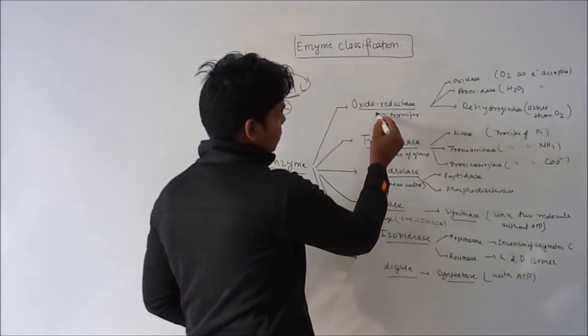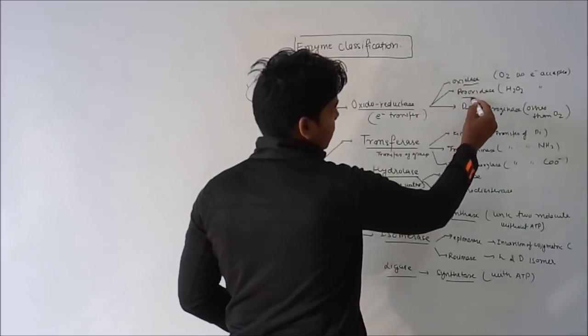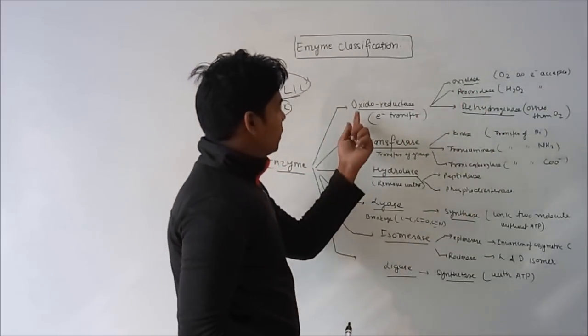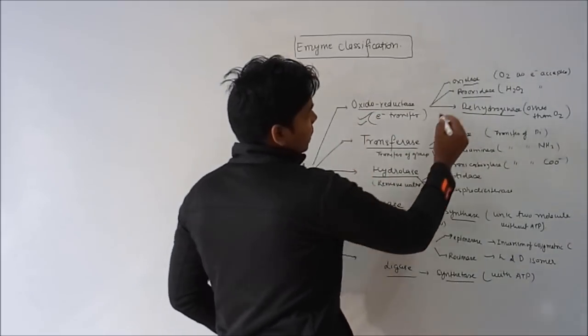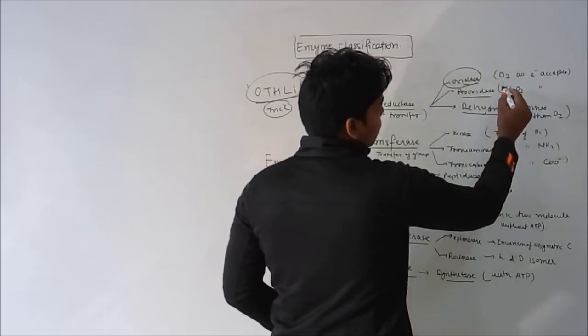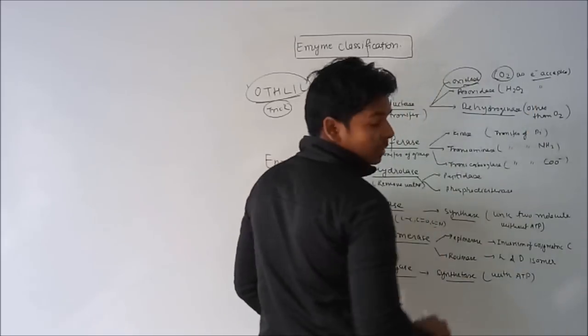Oxidoreductase. The example of oxidoreductase is oxidase, peroxidase, and dehydrogenase. In oxidoreductase, the transfer of electrons occurs. In oxidase, O2 acts as the large electron acceptor.